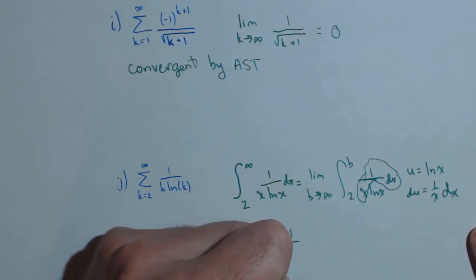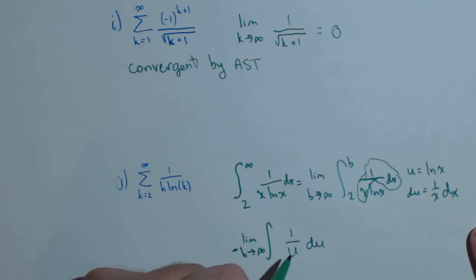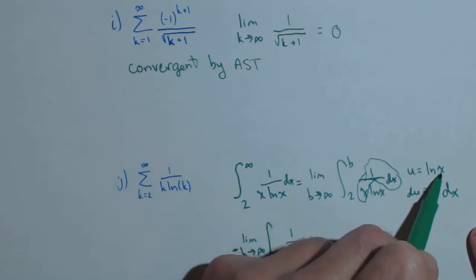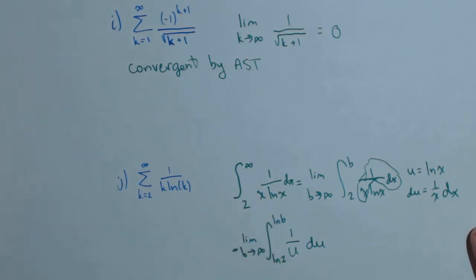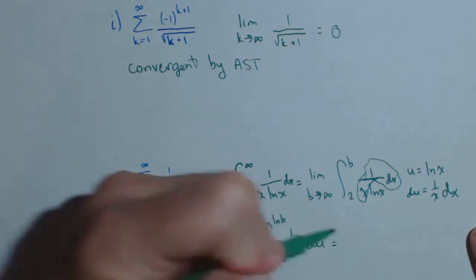So, what I'm going to end up with is 1 over u du, and I'm going to change my limits so I don't have to change them back. My lower limit's going to be ln of 2, because these were x values, so putting them in there, my upper limit's going to be ln of b. We'll see how that changes things later.